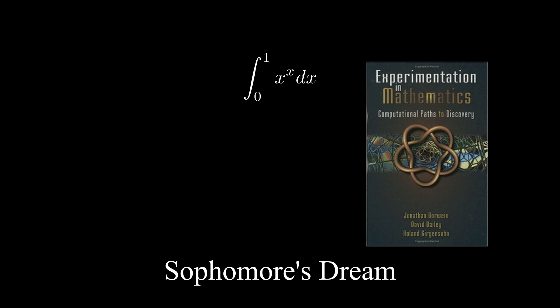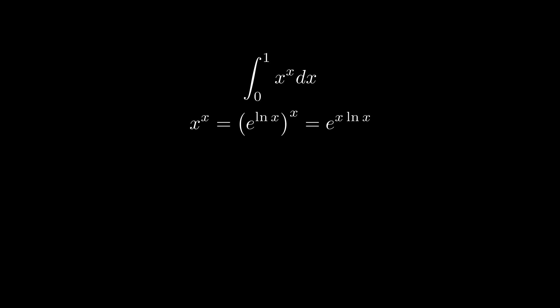The last integral question we are going to investigate actually has a beautiful name. It's called the sophomore's dream. The name appeared in the book Experimentation in Mathematics. To calculate the integral, let's first rewrite x to the power of x as e to the power of x log x.